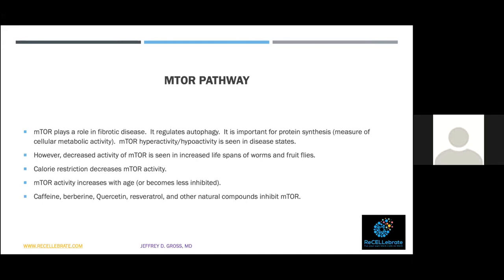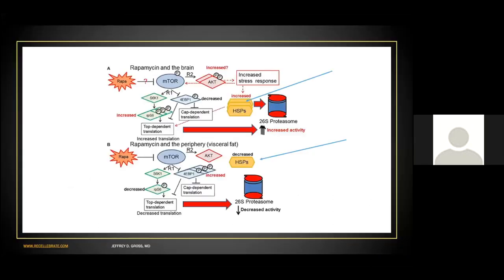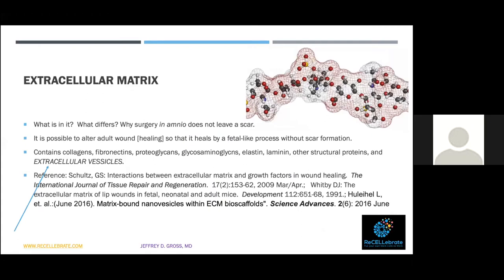Interestingly, mTOR activity increases with age or becomes less inhibited, becoming dysregulated so cells don't behave correctly. Caffeine, berberine, quercetin, and resveratrol — found in red wine and other natural compounds — inhibit mTOR and are associated with longevity and antioxidant effects. Following the blue arrows in the diagram, you can see the involvement of heat shock proteins in the mTOR pathway and how these all relate.